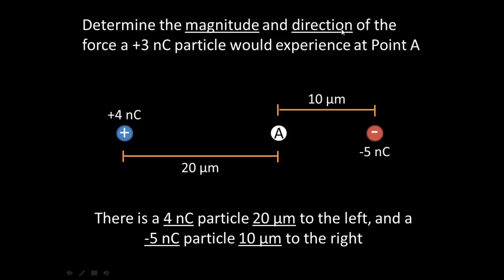Let's determine the magnitude and direction of the force a plus 3 nanocoulomb particle would experience at point A. Notice this is point A right here, and there are two other particles in this system: one being a plus 4 nanocoulomb charge towards the left, 20 micrometers away from point A, and the other being a minus 5 nanocoulomb charge, 10 micrometers away towards the right of point A.